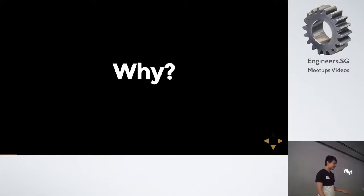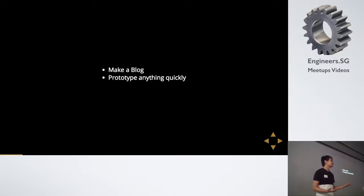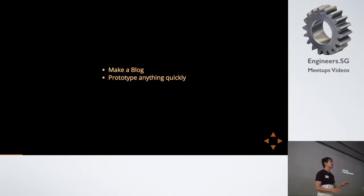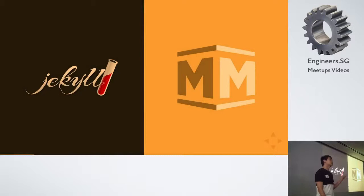The question is: why do I want to make a static site generator with Gulp? When we think of static site generators, we usually think of Jekyll and Middleman. For me, I wanted to make a blog because I didn't want to use WordPress anymore. That was one of the initiatives behind this. The second was to prototype anything quickly in frontend. These are the two main static site generators on the market — Middleman and Jekyll — but I didn't want to use Ruby, which is why I didn't consider them.